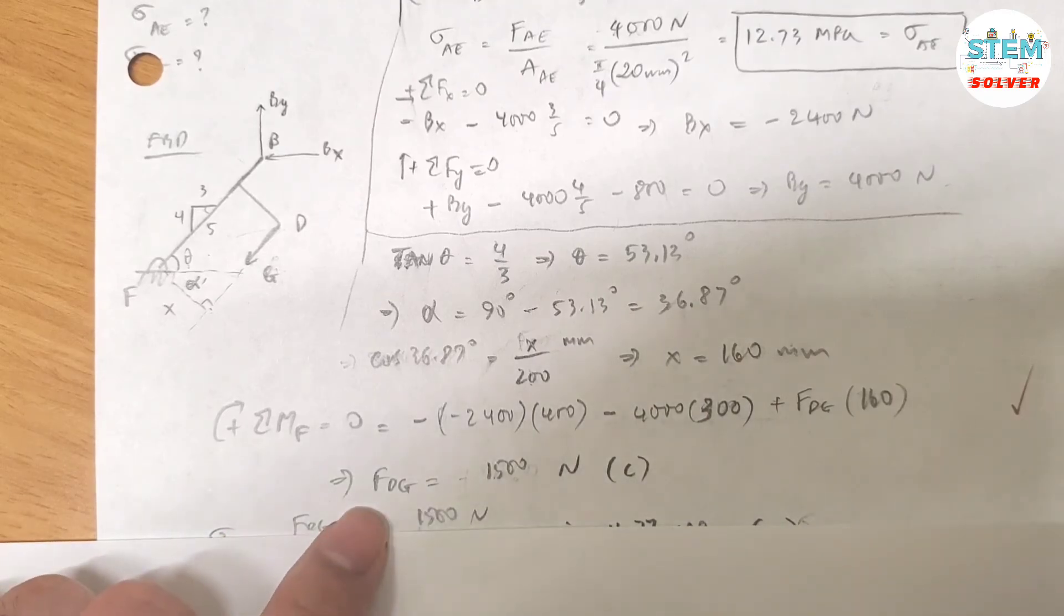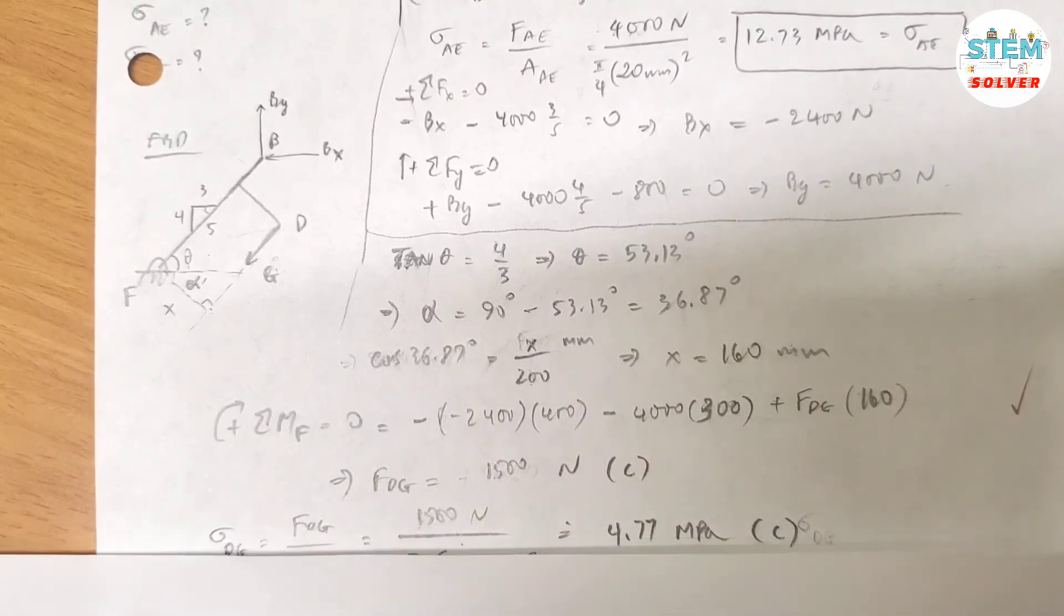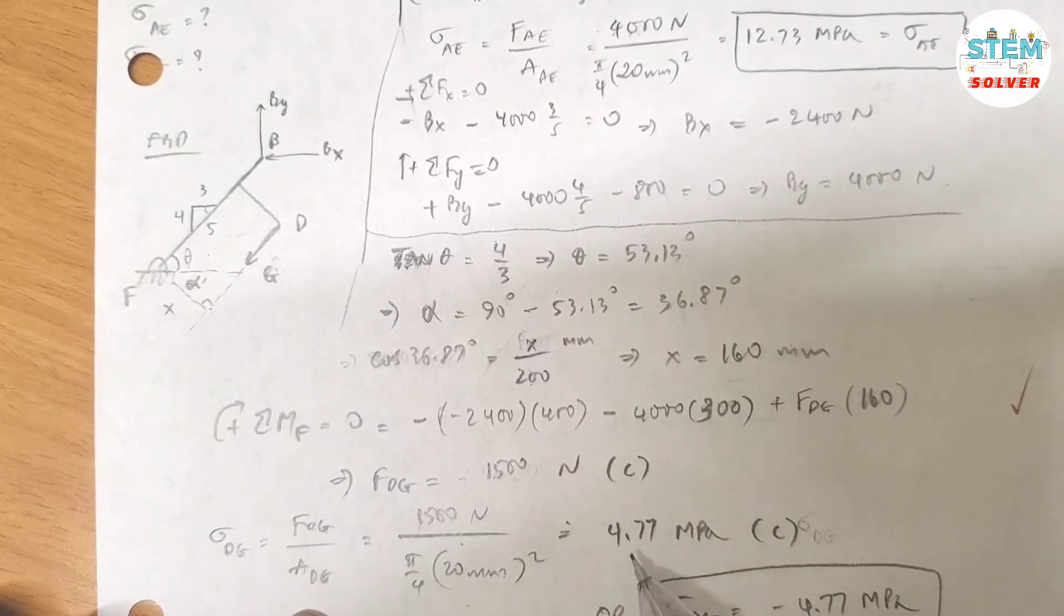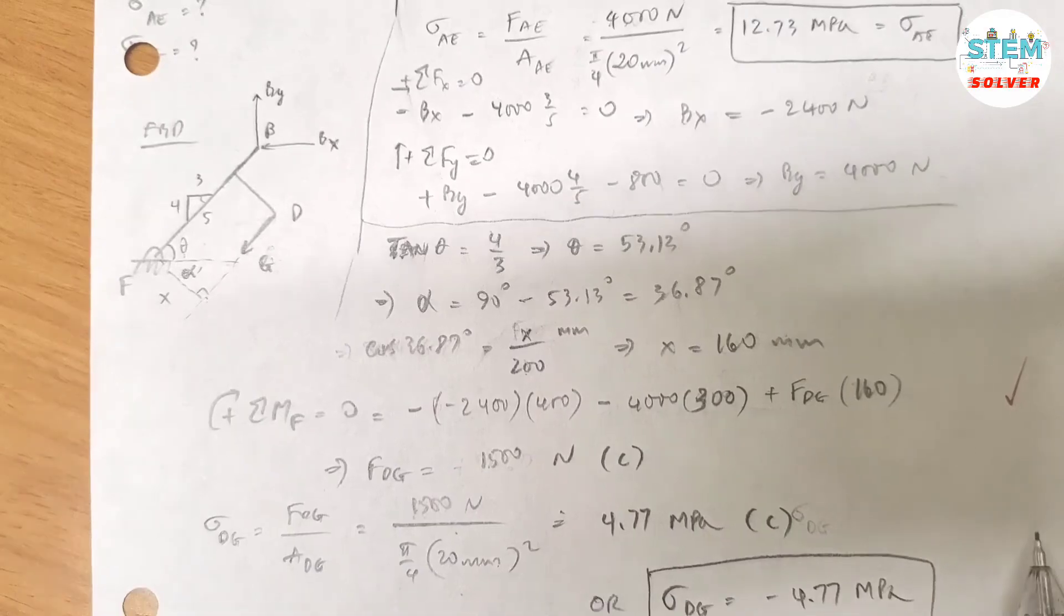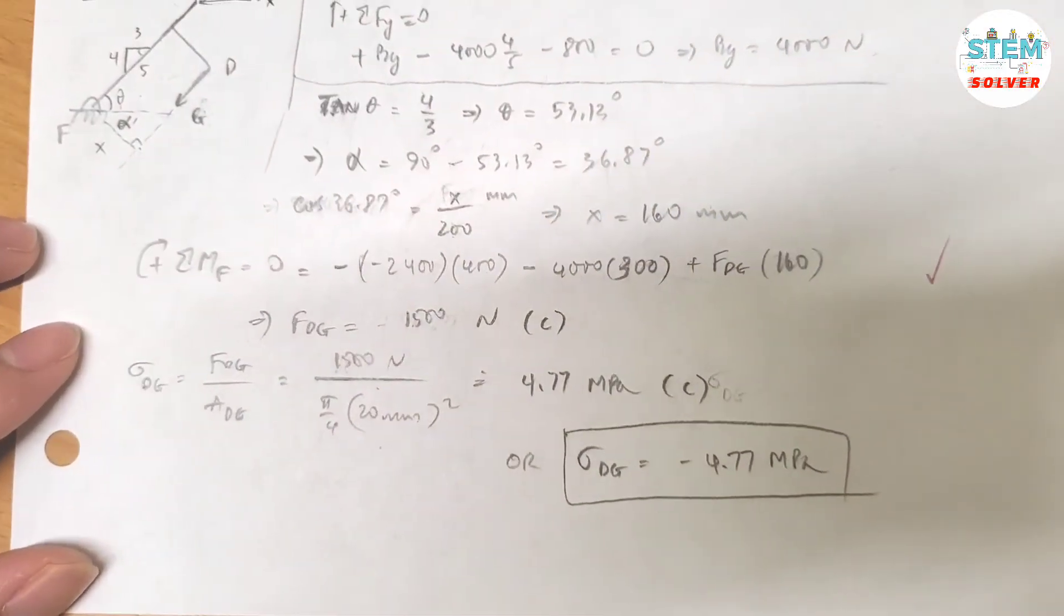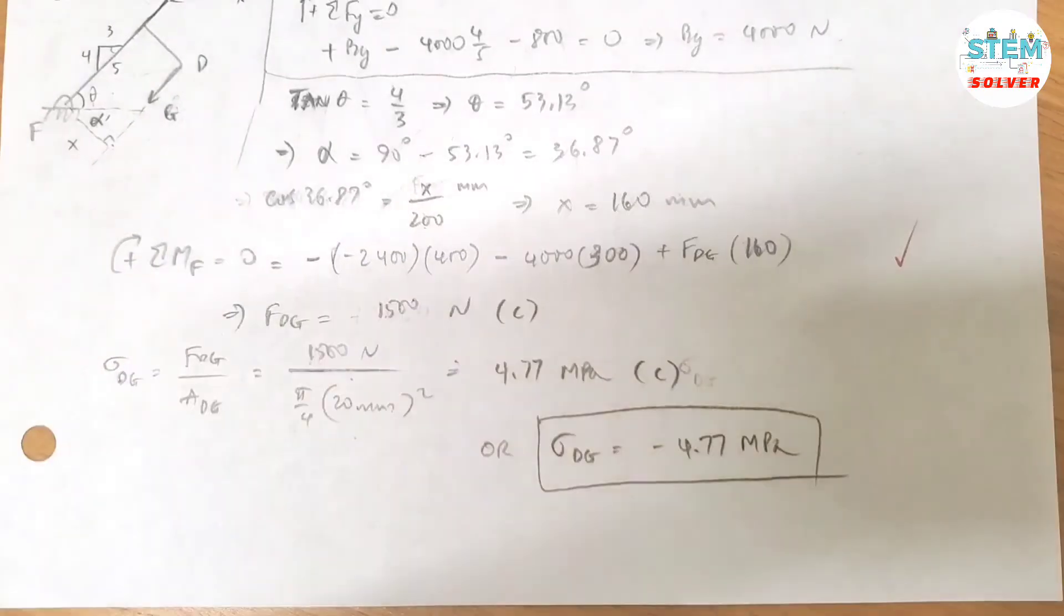Now since we know the normal force, we can find the normal stress. So normal stress equal to normal force divided by the area. I plug into the formula and got the normal stress of 4.77 MPa. So this is your final solution eventually. That's it.